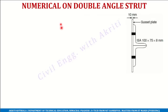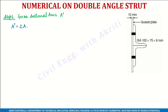The first step is to obtain the gross sectional area of the built-up section. A' = 2 × AG, where AG is the gross sectional area of one angle. So A' = 2 × 1336 = 2672 mm².